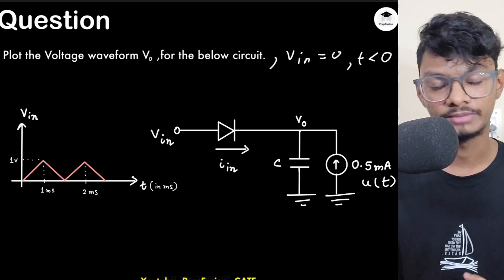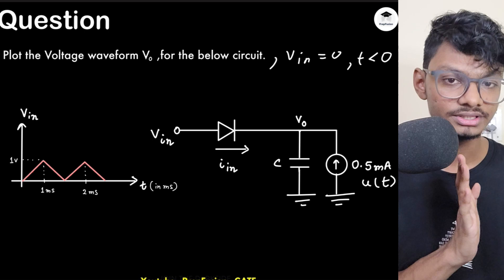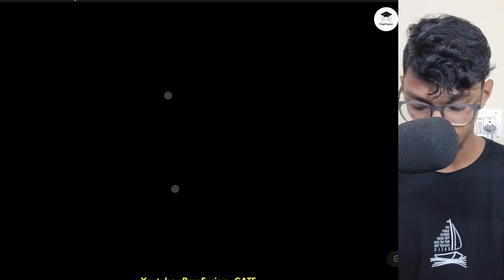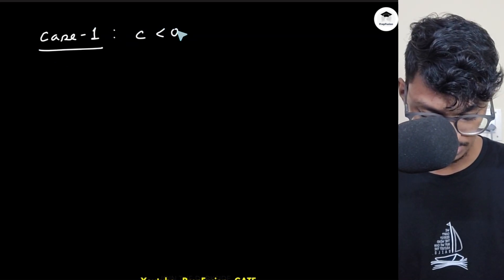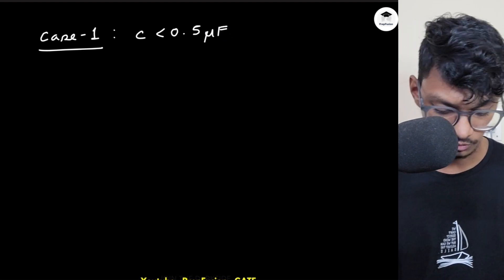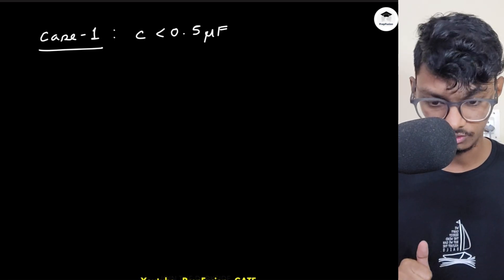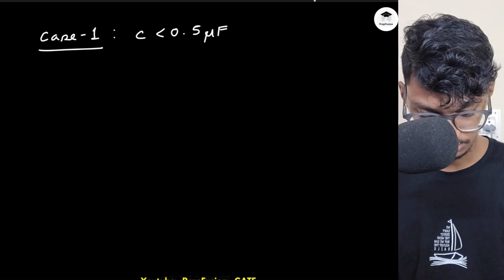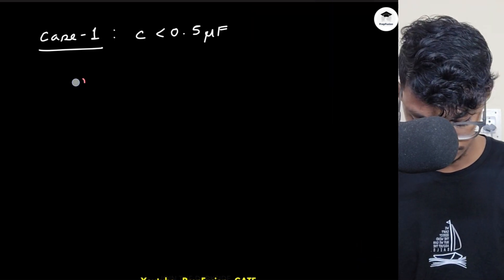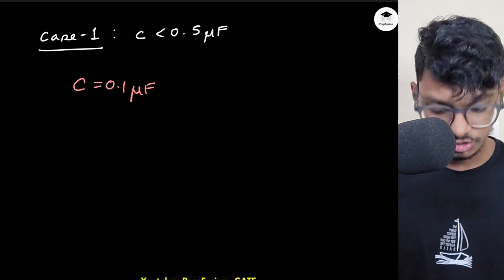This is a good question — not a simple cake-type question. There are only two cases; I'll explain why in a bit. Case one is when C is less than 0.5 microfarad. I'll come to why 0.5 microfarad is the edge case later. Let's choose C = 0.1 microfarad as our example.